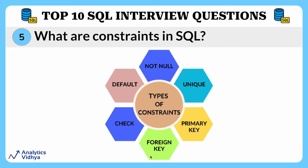PRIMARY KEY is a combination of NOT NULL and UNIQUE — it ensures that each row in a table is uniquely identifiable. FOREIGN KEY prevents actions that would destroy links between tables; it creates a relationship between two tables by ensuring that values in one table's column match values in another table's column. CHECK constraint ensures that the value in a column satisfies a specific condition — it defines rules that data in a column must follow. Finally, DEFAULT sets the default value for a column if no value is specified.